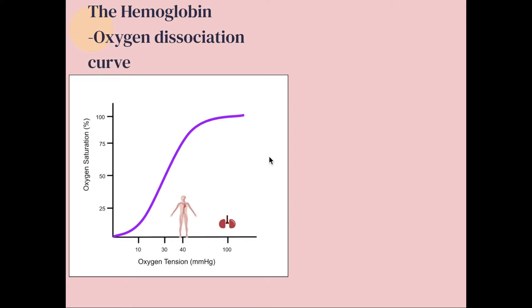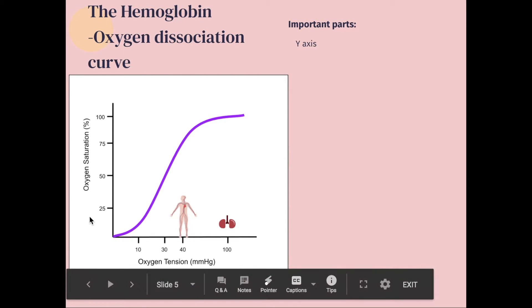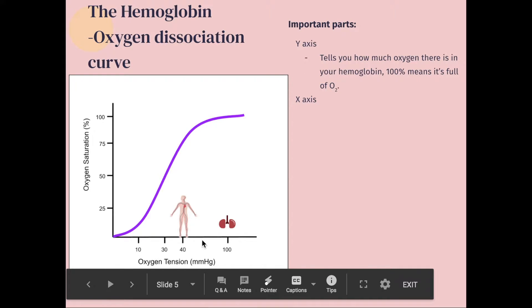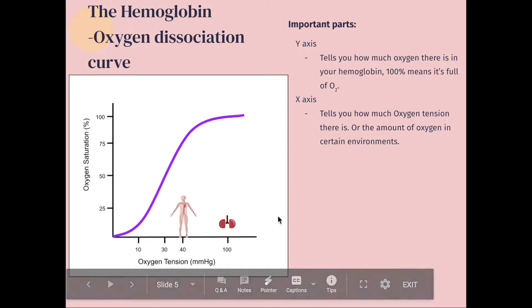So the next part is the hemoglobin oxygen dissociation curve. So let's talk about the parts of the curve. First of all, the y-axis is the oxygen saturation. So the higher the number, the more saturated your hemoglobins are with oxygen. And then the x-axis is the oxygen tension. So the higher the number, the more oxygen there is in that specific environment. Like as you can see in the lungs, it's at 100. And just for the sake of remembering things, I placed the images of the lungs and the tissues so that it's easier to understand the curve as well.